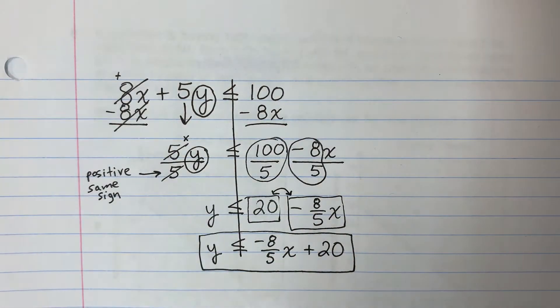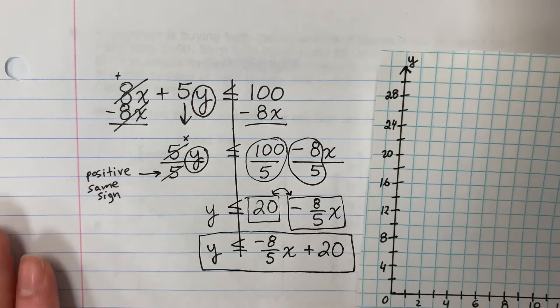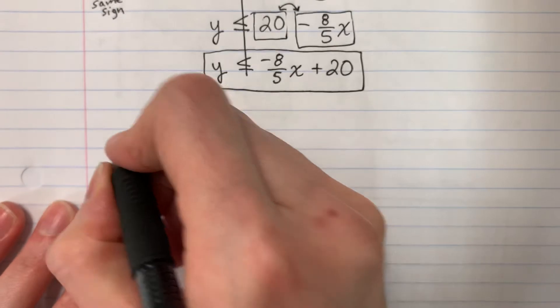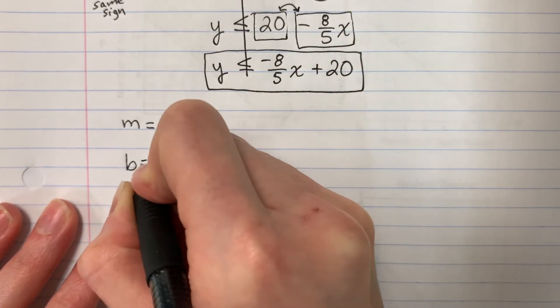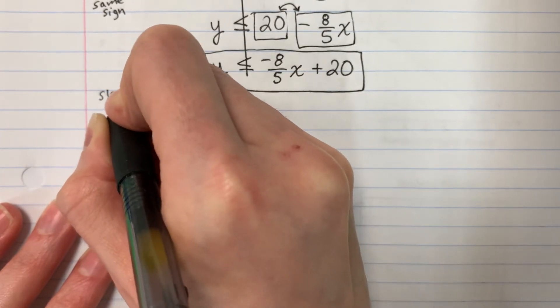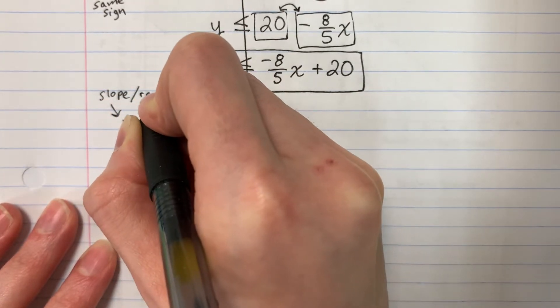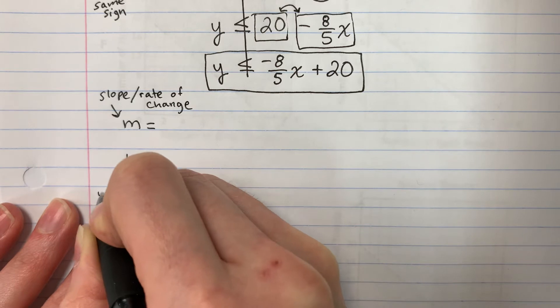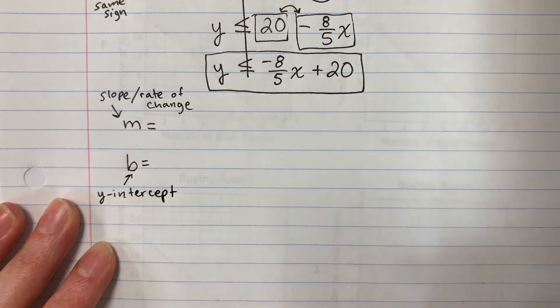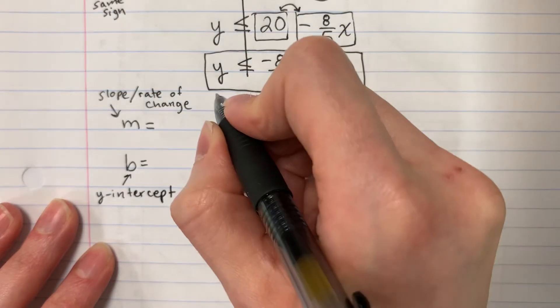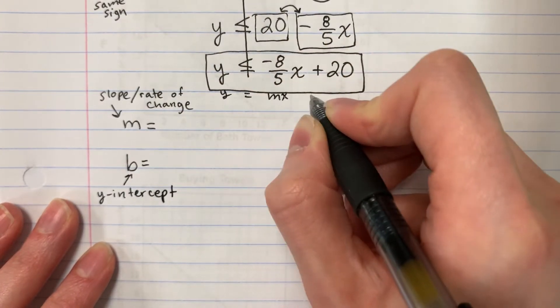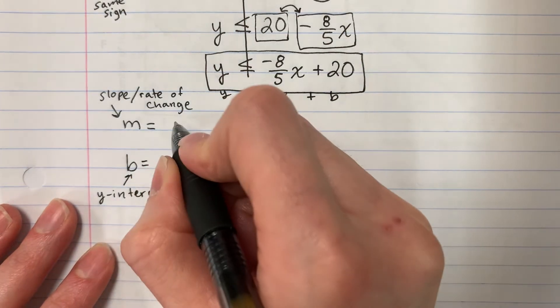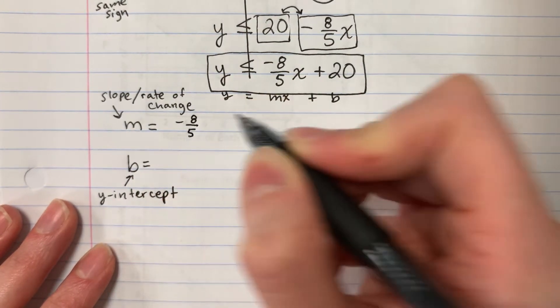There it is. Now we are going to need to graph. So before we do this, we're going to need to write M and B. Remember M is slope or rate of change. And remember B is y intercept. So remember this is y equals Mx plus B.